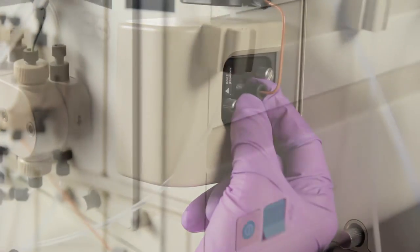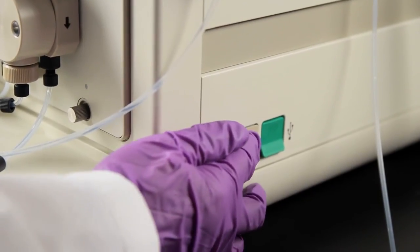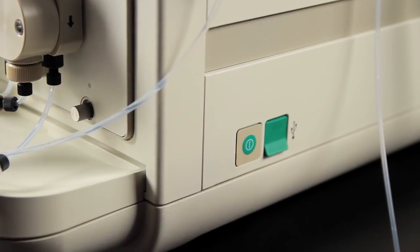Reconnect the tubing lines to the conductivity monitor and restart the NGC instrument. Your flow cell should now be free of bubbles and ready for your next run. If you have other questions about your NGC or any of your Bio-Rad products, please write to us at support at Bio-Rad dot com.